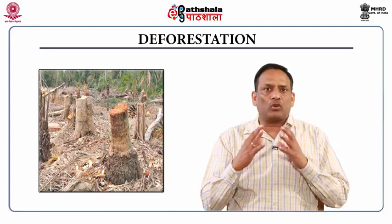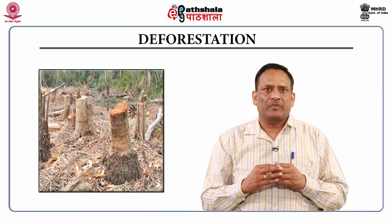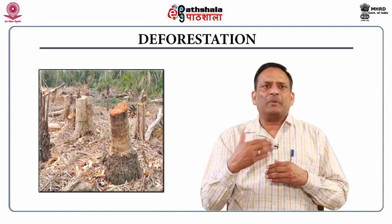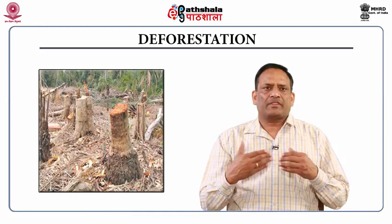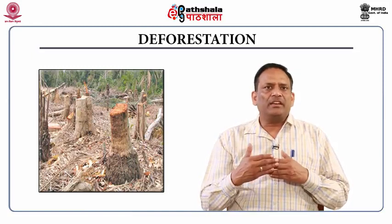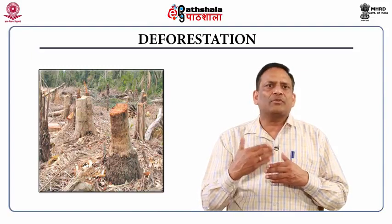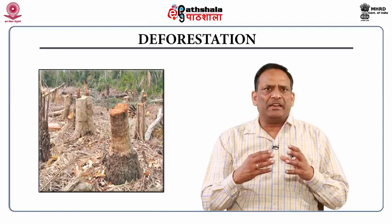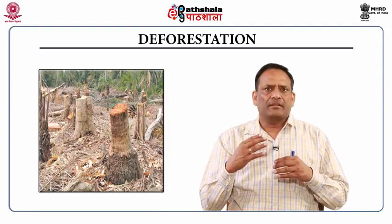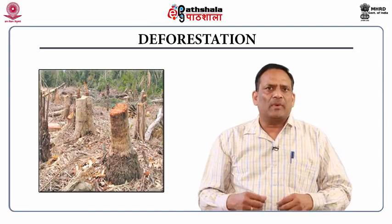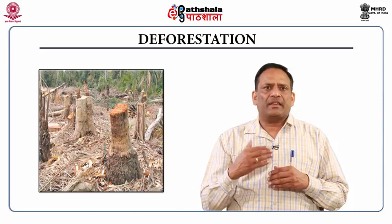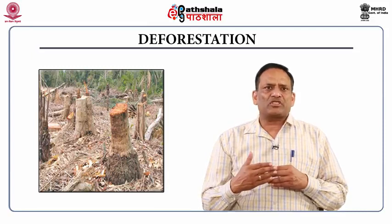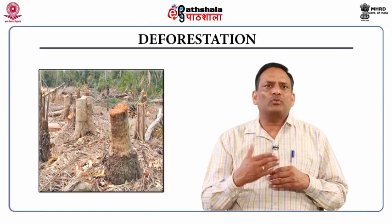Deforestation is one of the direct causes of species extinction in the terrestrial ecosystem. Different attributes of deforestation include expansion of agricultural fields, expansion of residential areas and industries, and obtaining fuel, fodder, furniture, raw materials for paper and pulp industry, and medicinal plants and precious herbs. Habitat fragmentation — the splitting of large units of habitat into smaller parts — as seen in the Amazon rainforests has resulted in significant biodiversity loss. The continual rate of deforestation will lead to extinction of 5 to 10% of species.